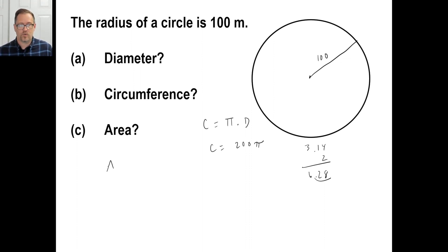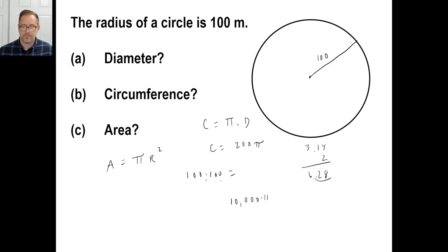The area formula is pi times the radius squared. The radius is 100, and 100 times 100 is 10,000. So the area is 10,000 times pi. Doing the arithmetic: 10,000 times 3.14 equals 31,400 square meters.